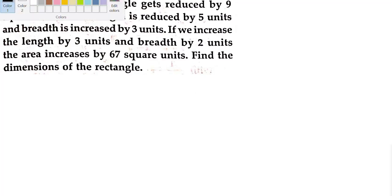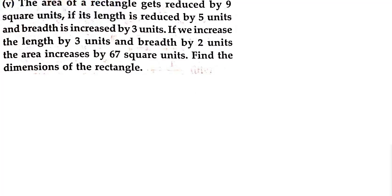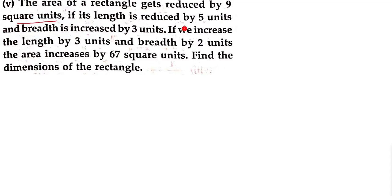Now let's see the question. The area of a rectangle gets reduced by 9 square units if its length is reduced by 5 units and breadth is increased by 3 units. If we increase the length by 3 units and breadth by 2 units, the area increases by 67 square units. Find the dimensions of the rectangle — that means length and breadth.